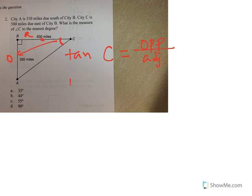So we can set up the equation with tangent of angle C is equal to 350, the opposite side, over the adjacent, which is 500.